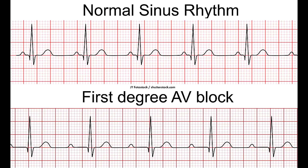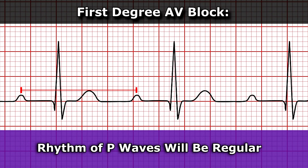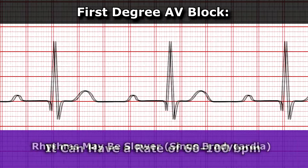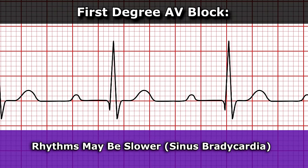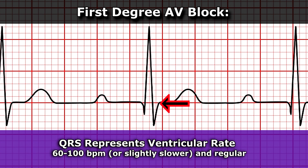So what are some characteristics and criteria this rhythm must have in order to be a first-degree heart block? Whenever you look at this rhythm it's going to look very similar to normal sinus rhythm. The P waves are going to be normal. The rhythm of the P waves, which looks at our atrial rate, will be regular. It can have a rate between 60 to 100 beats per minute, and sometimes these rhythms can be a little slower, so you may see sinus bradycardia with a first-degree AV block. The QRS complex is going to be normal, measuring less than 0.12 seconds, and the ventricular rate can be anywhere between 60 to 100 beats per minute or slightly slower, and it's going to be regular.